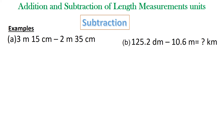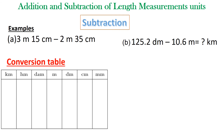Let's continue with subtraction. We are given two examples — I will do the first one and then you try the next before comparing. We have 3 meters and 15 centimeters minus 2 meters and 35 centimeters. The word 'and' replaces the decimal point — you can write the units this way or use the decimal point.